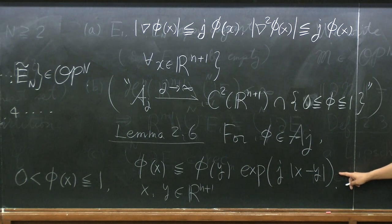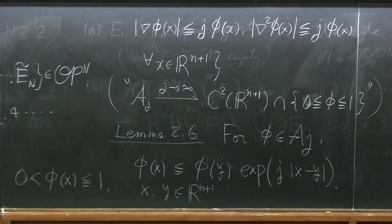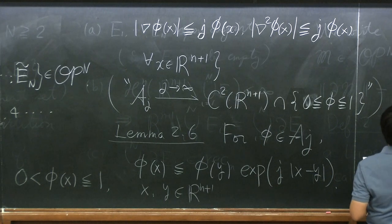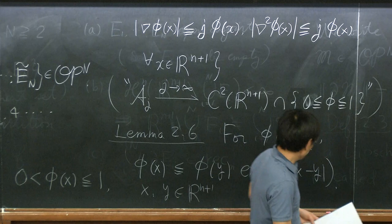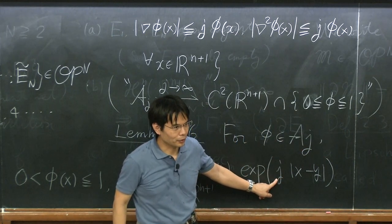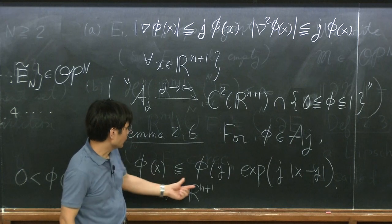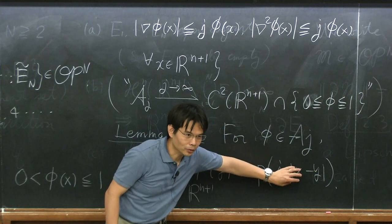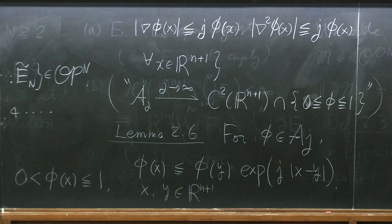This estimate tells you the character of these functions: if x and y have distance less than 1/j², then exp(j·|x−y|) is very close to 1, so φ(x) and φ(y) have compatible values — φ behaves more or less like a constant at scale 1/j². So this introduces a length scale of 1/j², which I'm going to utilize in a moment.